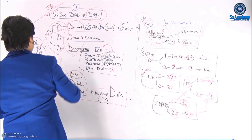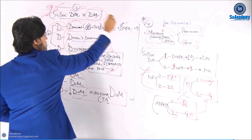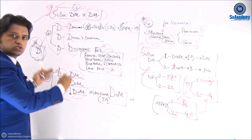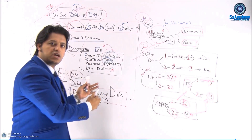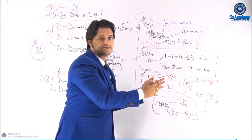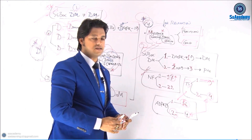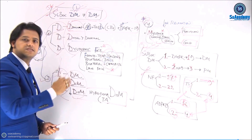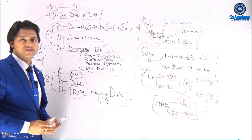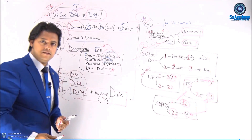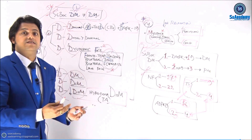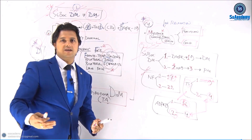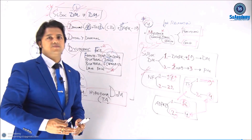So the summary: dystrophia myotonica — evidences of dystrophia and evidences of myotonia. Dystrophia first bundle pack: D for dominant, D for distal, D for dystrophic facies. Third bundle pack: DM for diabetes mellitus, D for DCM dilated cardiomyopathy, and D for D-zone meaning hypogonadism and testicular atrophy.